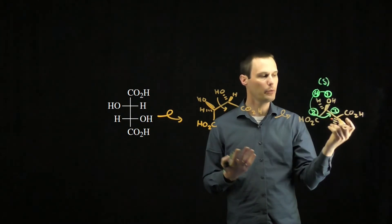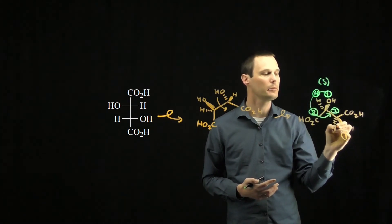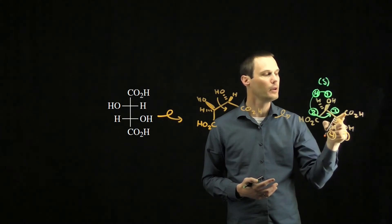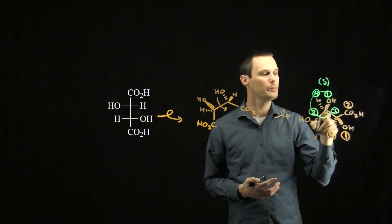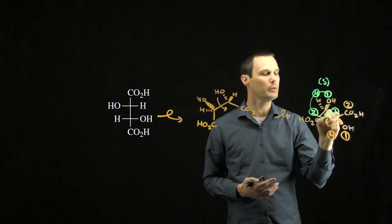For the other stereocenter in the molecule, the priority groups are going to be the same. The oxygen is going to be one. The hydrogen will be four. The carbon bonded to oxygen three times will be priority two. And the other carbon in the chain will be priority three.